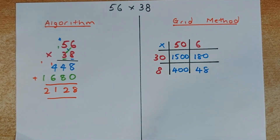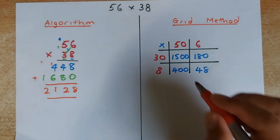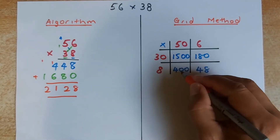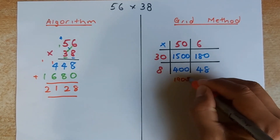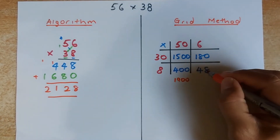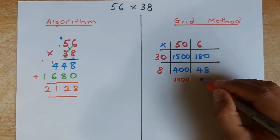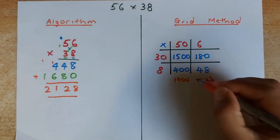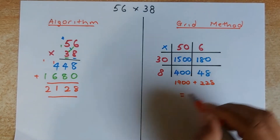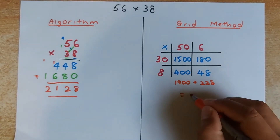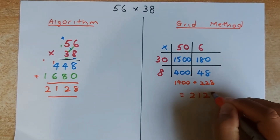What's the next step? You are going to add everything inside the box. If you cannot add them up in your head, just do it step by step. 1,500 plus 400 is 1,900. And then 180 plus 48 is going to be 228. If you add these two numbers together, you will get 2, 1, 2, 8.